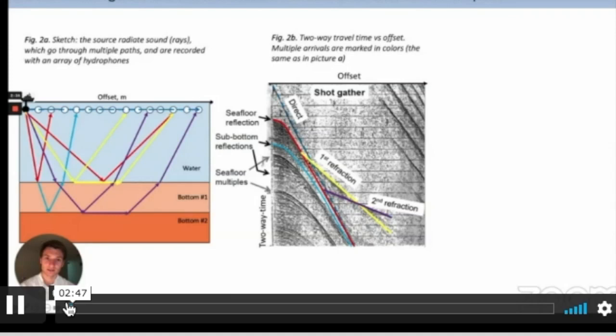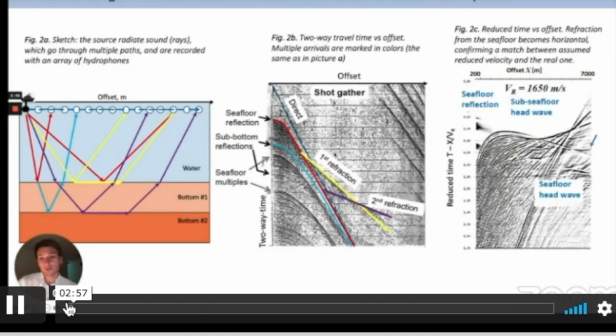If we apply so-called reduced timing to the picture on the left, it just reshapes the two-way travel time a little bit so we can easily analyze it. Reduced time is travel time minus offset divided by the reduced velocity Vr. In this case, in this example, we choose 1650 meters per second reduced velocity. If this reduced velocity matches sound speed at the interface, then this refraction will be reshaped into a horizontal straight line. And it makes estimation of bottom sound speed pretty easy. In this case, this refraction is a straight line. It means that sound speed here is 1650 meters per second. So, it's a well-known methodology.